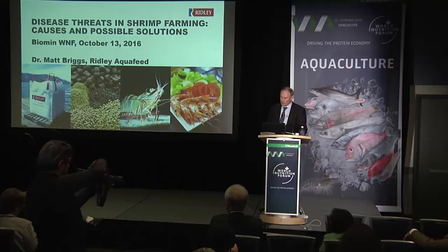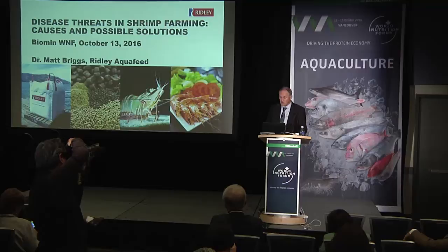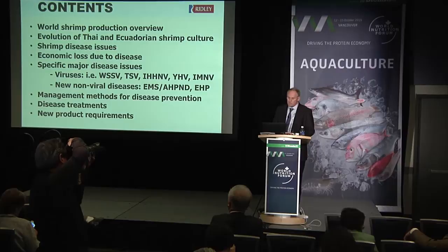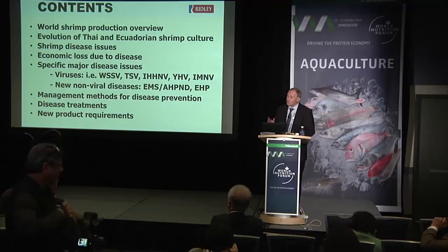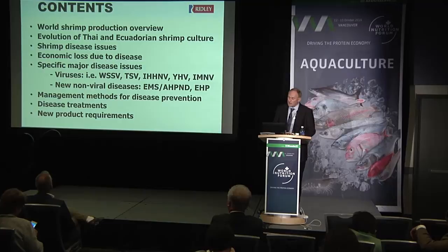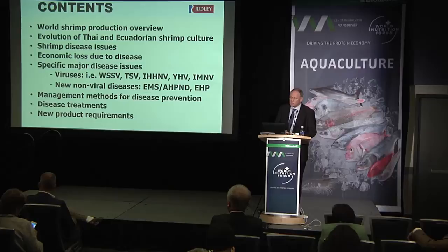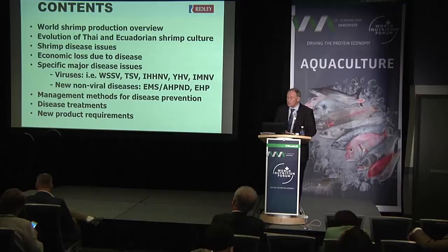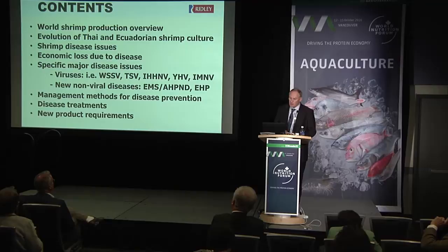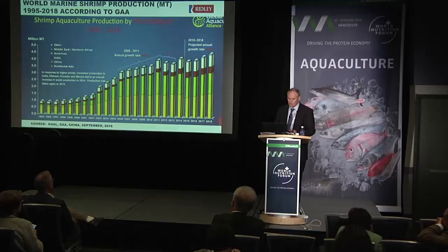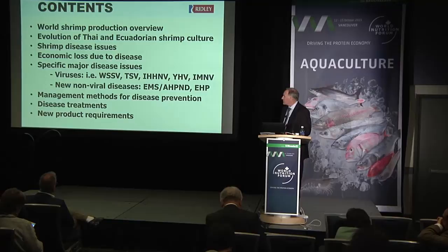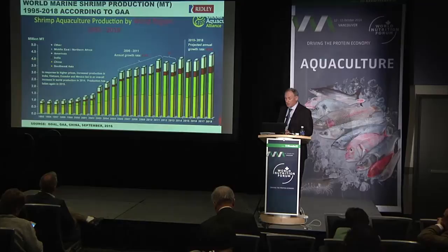I'm going to talk about the current disease issues. This is a very dynamic field and diseases are probably the major cause of problems in the shrimp farming industry right now. I'll briefly go through the world production overview, look at Thailand and Ecuador as examples of how disease affects production, discuss disease issues and economic loss, look at specific viral diseases, newer emerging ones like AHPND, EMS, and EHP, and then management methods for disease prevention, treatments, and new product requirements.